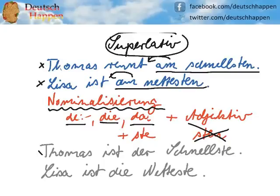Let's take our original sentences. Since it now describes the subject, we simply use ist — we don't need the verb rennt anymore. Therefore, we get Thomas ist der Schnellste. S-T-E at the end and your article. Thomas is the fastest — the fastest runner.